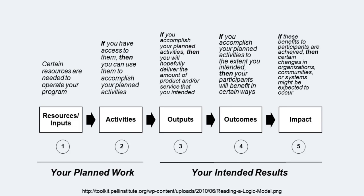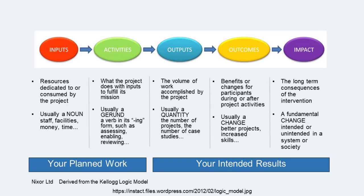Let's look at a slightly different way of expressing the same basic idea. In this model, there's a differentiation between planned work and intended results. Again, starting with resources: if you have access to resources, then you can use them to accomplish activities. If you accomplish activities, then you will deliver a service—the output you intended. If you deliver the service, then users will benefit by attaining outcomes. If users attain those outcomes, then you might expect long-term changes and benefits to occur. Another impact model also separates planned work and intended results, and provides definitions of each element followed by suggestions of the form these elements come in. For instance, resources are usually nouns such as staff, facilities, time, money, etc. Outputs are often expressed as a quantity of work accomplished, and outcomes and impacts are typically changes—with the difference being largely a scale issue.